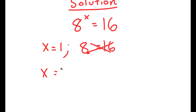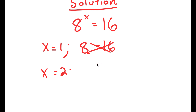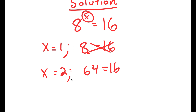Now if I plug in x equals 2, I get 8 to the power of 2 is equal to 16, and 8 to the power of 2 is 64, so I get 64 equals 16. Notice how there is a big gap between 8 and 64, so we know that the value of x is not going to be a whole number but a decimal, somewhere between 1 and 2. So x is greater than 1 but less than 2.